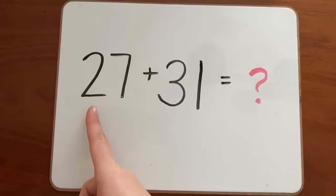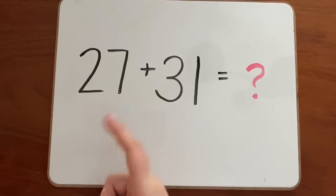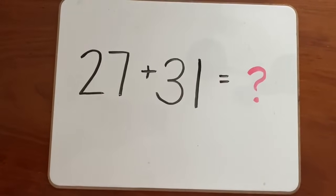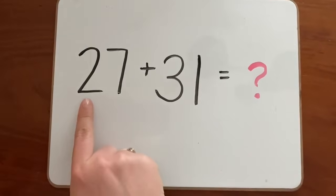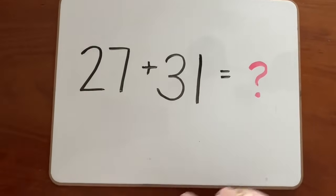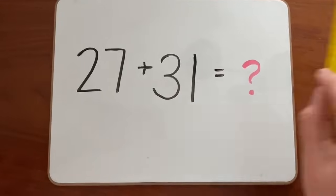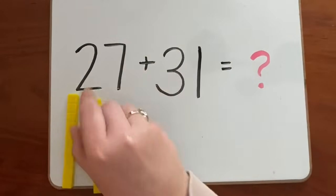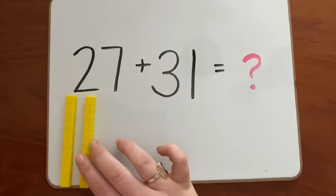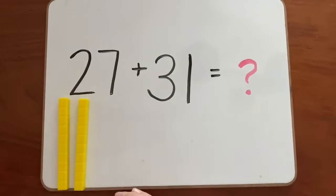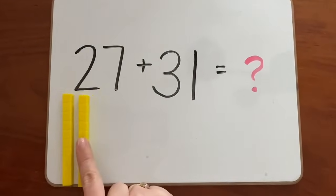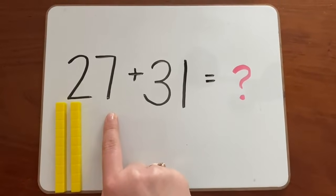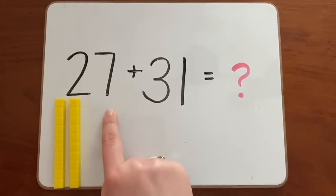To make this number 27 in longs and cubes, we have to look at the tens and the ones. How many tens are in the number 27? There are two tens in 27, so I need two longs. We have our two longs, and we have seven ones in the number 27. So we need to add seven cubes.